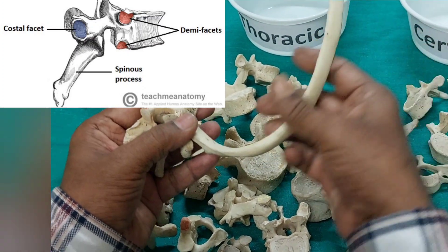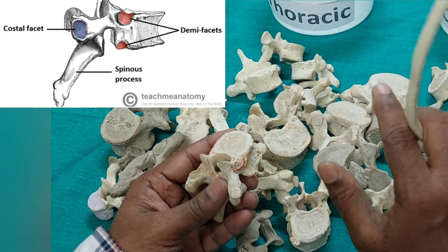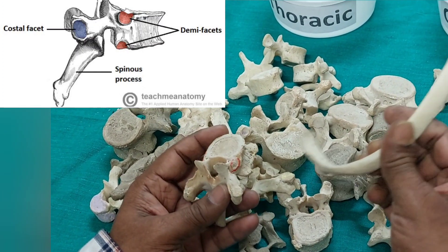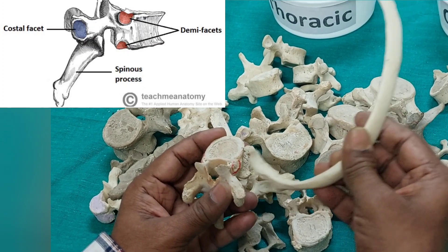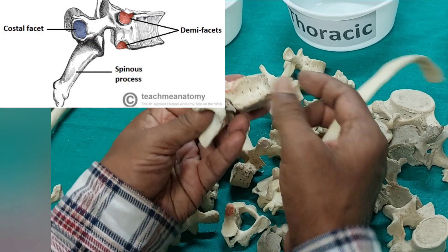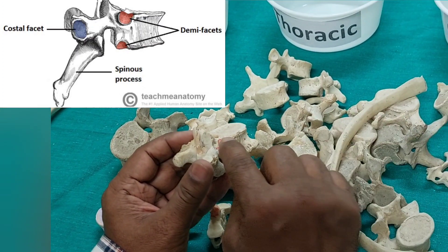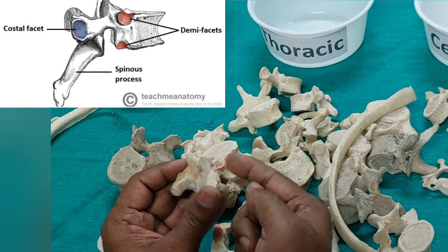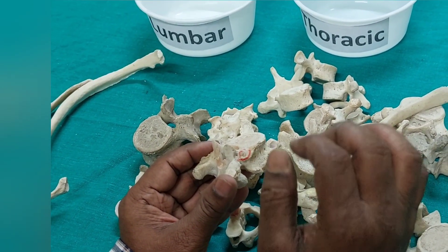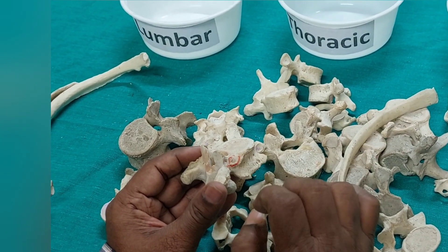In every thoracic vertebra there should be an articular facet or costal facet. There are 12 thoracic vertebrae and 12 pairs of ribs, so each rib will articulate with the thoracic vertebra only, not with other vertebrae. In every thoracic vertebra you will get a costal facet or articular facet on the posterolateral side of the body of the thoracic vertebra, as well as a facet on the transverse process. If you see just one point — only on the vertebral body — this facet may be circular, or may be a demi-facet (half above or half below), or may be a full facet. Whatever the shape — half or full — if there is any facet on the posterolateral side of the vertebral body, it is definitely a thoracic vertebra.